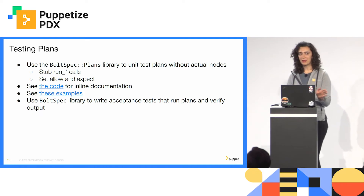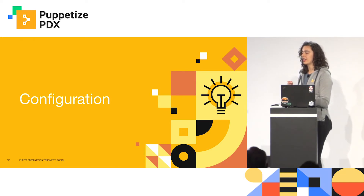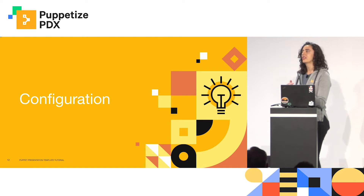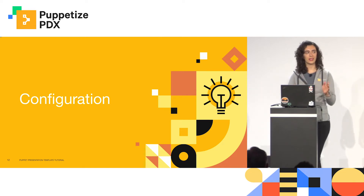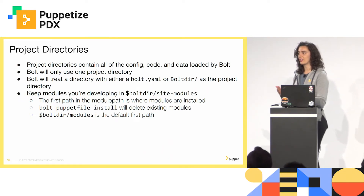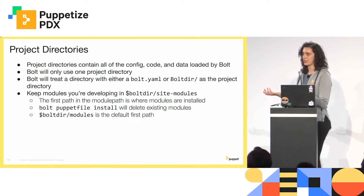The next topic, pivoting a little, is configuration. The Bolt team has a specific way of thinking about configuring Bolt. The first thing you'll want to set up as you start developing with Bolt is a project directory. A project directory encapsulates all of the config, code, and data that Bolt is going to use when you run it.